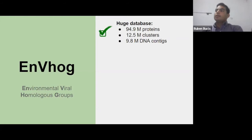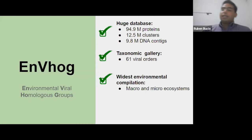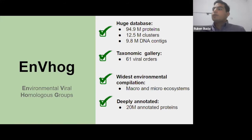It's a huge database — it includes almost 95 million proteins gathered into 12 million clusters, and also has almost 10 million DNA contigs. It's a taxonomic gallery encompassing 61 viral orders from different hosts, a wide compilation of environments from macro-environments and micro-ecosystems, and finally a deeply annotated dataset providing over 20 million annotated proteins.